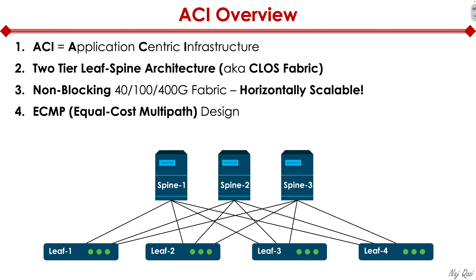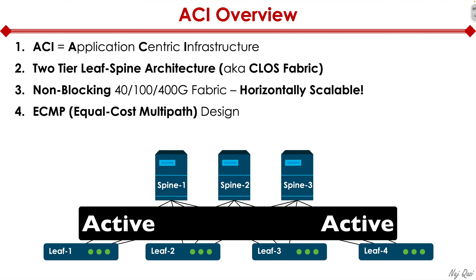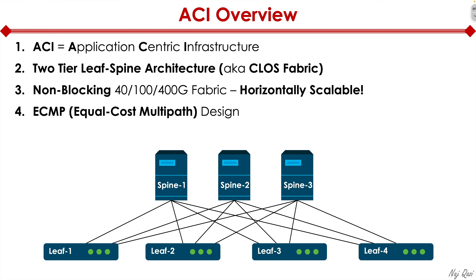It's also an ECMP — equal cost multi-path — design. If there's a VM attached to leaf 1 that wants to talk to a VM on leaf 4, all three links that leaf 1 has and all three links leaf 4 has are 100% active-active. There is no active-passive anymore. Traffic is sent in a load-balanced way across all available links at any given point in time, and it's very powerful.